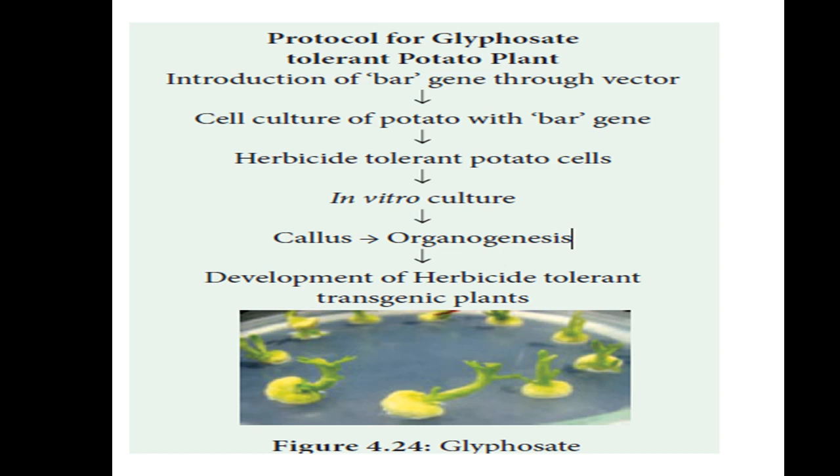Herbicide means killing of plants — 'herb' means plant, 'side' means killing. Glyphosate herbicide is sprayed on weeds (unwanted plants) to destroy them. When we spray the herbicide, the crop should not get damaged. That is why we use this protocol to introduce the BAR gene into the crops, so the crop becomes tolerant to the herbicide.